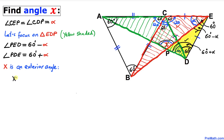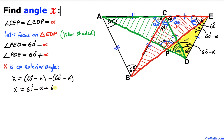So we can write X equals (60 degrees minus alpha) plus (60 degrees plus alpha). Simplifying, alpha and negative alpha cancel out, and we end up with X equal to 120 degrees.